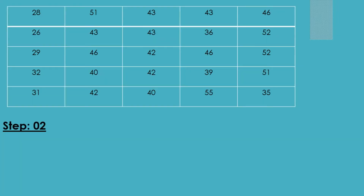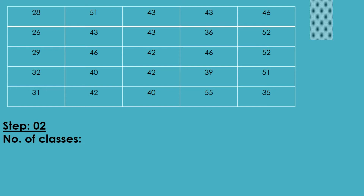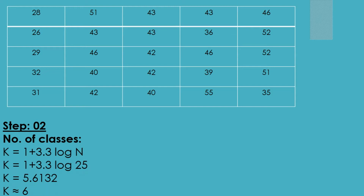Step two: find the number of classes, k. The formula is k equals 1 plus 3.3 log n. The total number of observations n equals 25, so k equals 1 plus 3.3 log 25, which is 5.6132. Note that k must be a whole number since the number of classes cannot be a decimal, so 5.6 is rounded to 6.